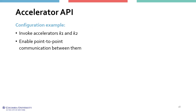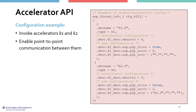Here is a sample configuration that could be passed to the ESP run API function to invoke accelerators K1 and K2 and enable point-to-point communication among them. The configuration contains one structure per accelerator. The first two parameters always identify the specific accelerator in the SOC. The third parameter is a configuration parameter of the accelerator that gets set at invocation time, and there may be multiple configuration parameters. The P2P store parameter specifies whether the output will be sent to memory or to another accelerator. The last two parameters are about receiving data either from memory or from other accelerators.